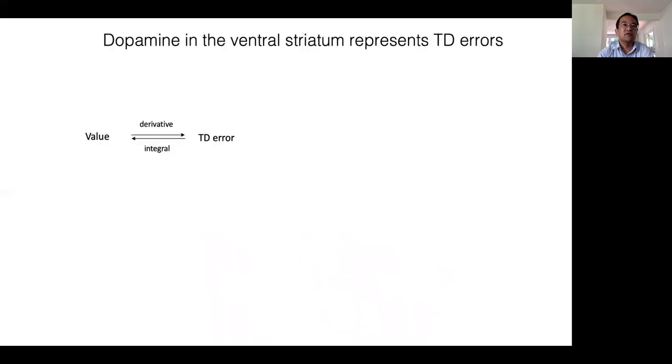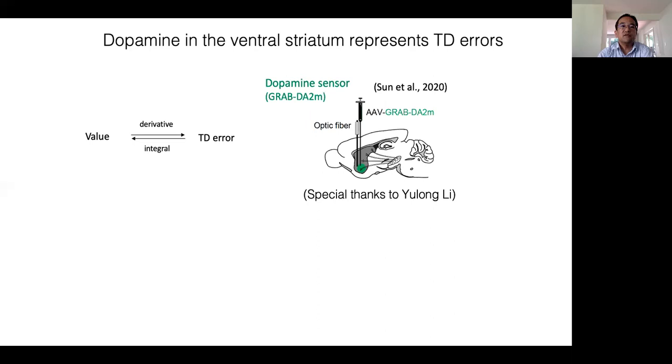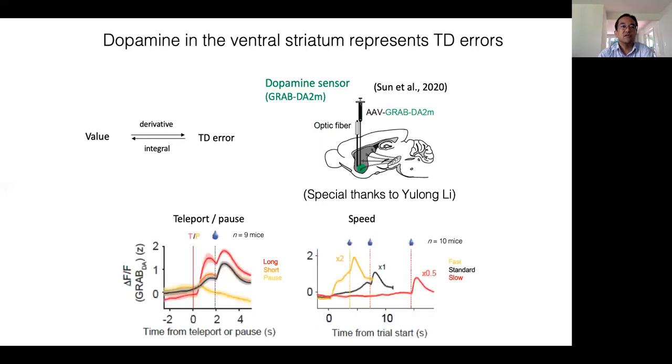TD error is the derivative of value. If this is the case, TD errors could be potentially converted back to value by temporally integrating TD error for a long time scale. We next asked whether dopamine signals become closer to value than RPE, potentially due to its slowness. We used a genetically encoded dopamine sensor, GRAB-DA, generously provided by Dr. Yulong Li. Dopamine signals measured in this method were still more consistent with reward prediction errors. So this conversion does not occur even in the dopamine dynamics.